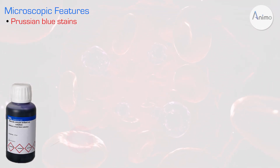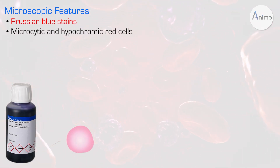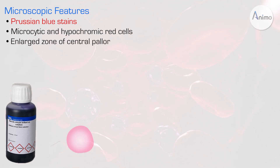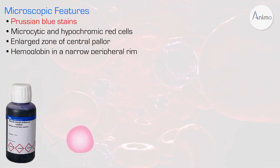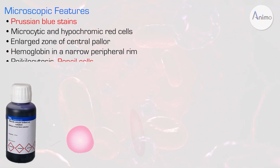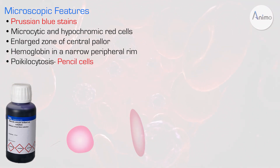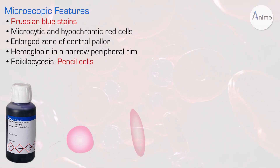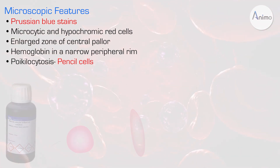To summarize the key points: we use Prussian blue stain — very important. We see microcytic and hypochromic red cells with an enlarged zone of central pallor, and hemoglobin is present only in a narrow peripheral rim. There are considerable changes in the shape of the RBC, which is known as poikilocytosis, and these RBCs look like pencils, so we call them pencil cells.